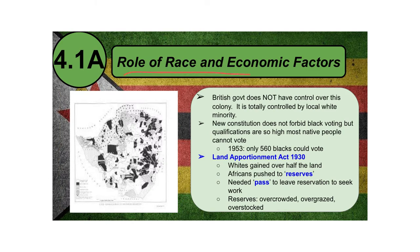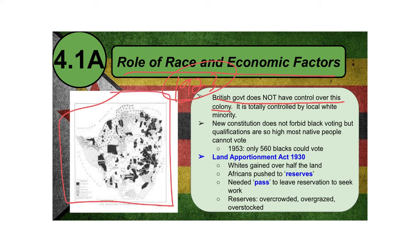Let's shift focus to the role of race and economic factors. In 1923, when Southern Rhodesia became its own colony, it was totally controlled by the local white population — not the British government. Britain only had a supervisory role. The white population created a constitution that did not specifically forbid black people from voting, but the qualifications were so high that most native people simply could not vote. In 1953, only 560 black people in the entire nation of Zimbabwe could actually vote.